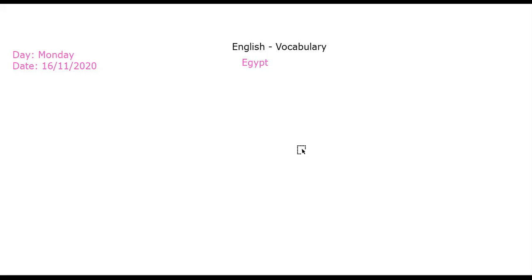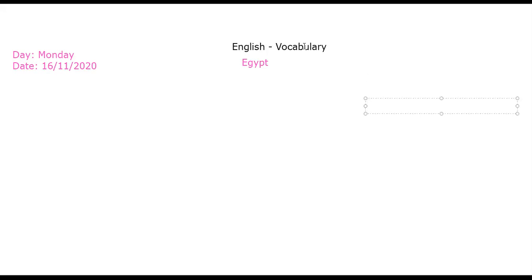Little by little we are going to understand this lesson and gain more information and knowledge about Egypt — to know about the history of Egypt up to this day. But first, let's go over our vocabulary words. These are our words before the lesson, so these are our words for today.